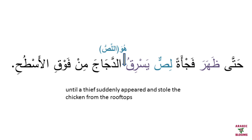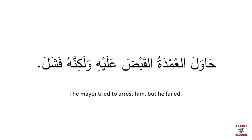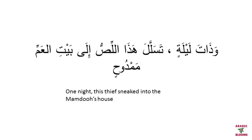حاول العمدة القبض عليه — the mayor tried to arrest him. ولكنه فشل — but he failed. You have the verb حاول — tried. Ask: من حاول — who tried? العمدة is the subject here. So the mayor tried — حاول العمدة القبض عليه. وذات ليلة — one night — تسلل هذا اللص — this thief sneaked.